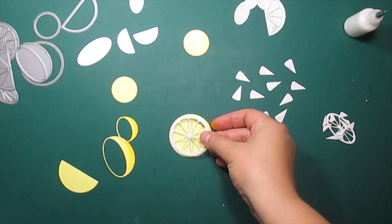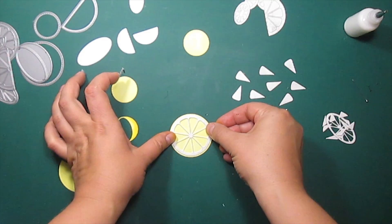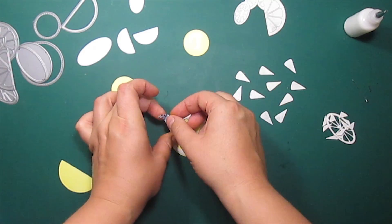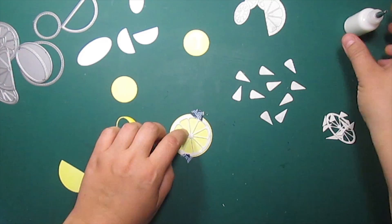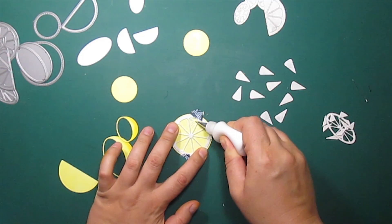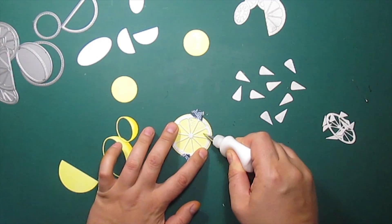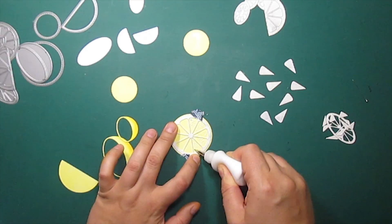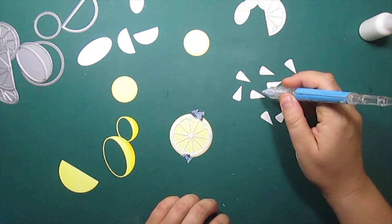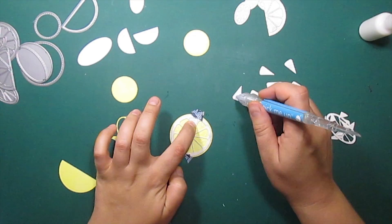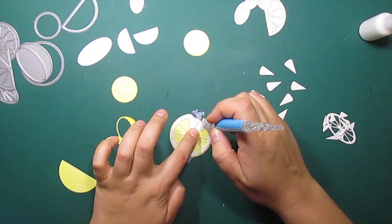The list of all the supplies I'm using is in the description for this video if you're interested. Now I'll show you a nice way to add dimension to those die-cuts. I'm securing this piece to a circle base to use it as a stencil. Then I'm applying some glue with a needle applicator to stick the inside pieces one by one.